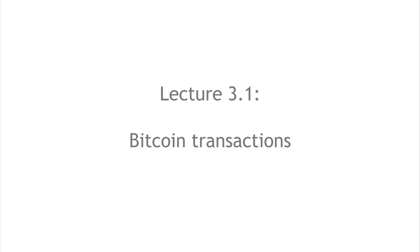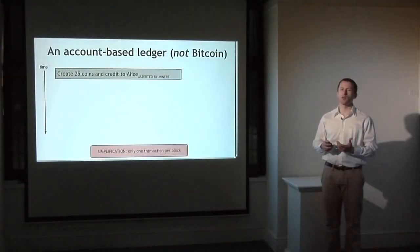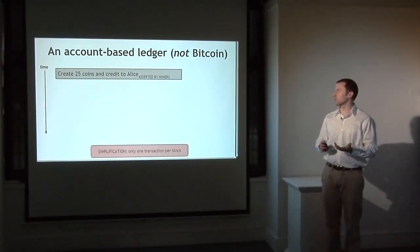We'll start by looking at transactions in Bitcoin. Transactions are really the fundamental building block on which the whole currency is going to be based. Remember, we have this ledger — the ledger is append-only, so as time goes on we just add more and more units to it. We'll take a simplified model where instead of having blocks we just have individual transactions being added to the ledger one at a time. The first model you might think of — and it's actually a lot of people's mental model for how Bitcoin works — is an account-based system.